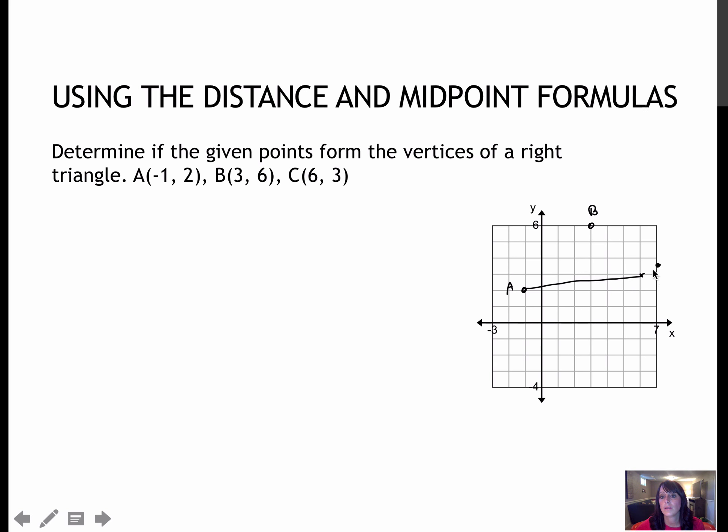So my triangle looks like this. The question is, is this a right triangle? That means, is that a right angle? Obviously, A is not a right angle. C is not a right angle, just based on visually looking at the triangle.